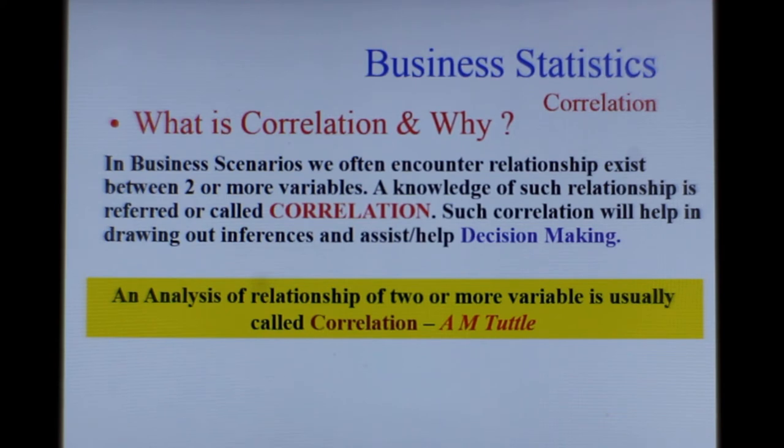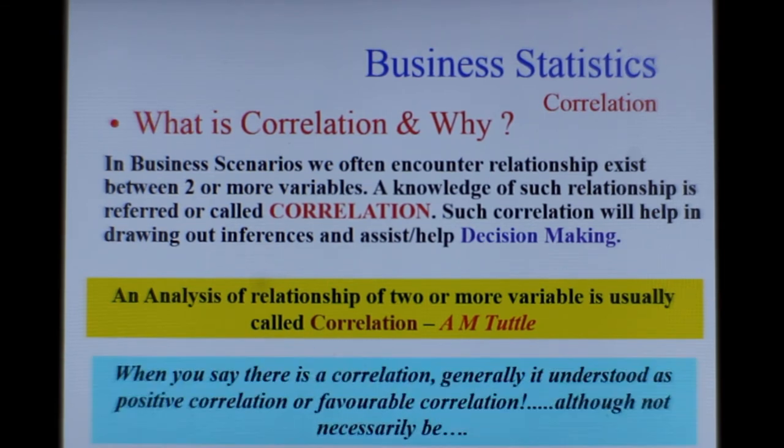An analysis of relationship of two or more variables is usually called correlation. Generally when you talk about correlation you talk about positive correlation or a favorable correlation, but it may not necessarily be.